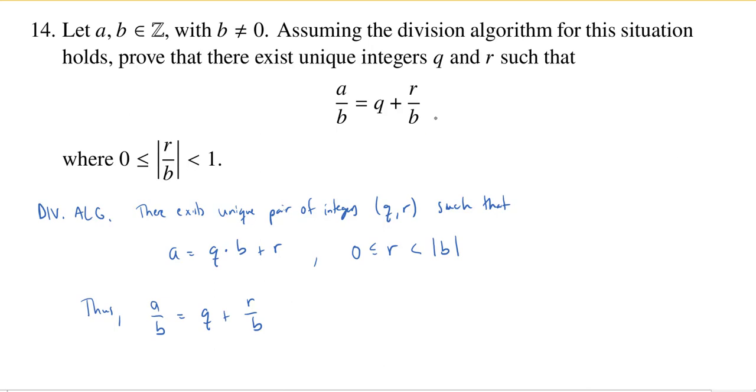We've already found this equation. Now, we just need to make sure that this inequality holds. Well, let's see. If I take R and I divide it by the absolute value of B, then I'm going to, in the middle, have R divided by the absolute value of B. And that will be less than the absolute value of B divided by the absolute value of B, which is one.